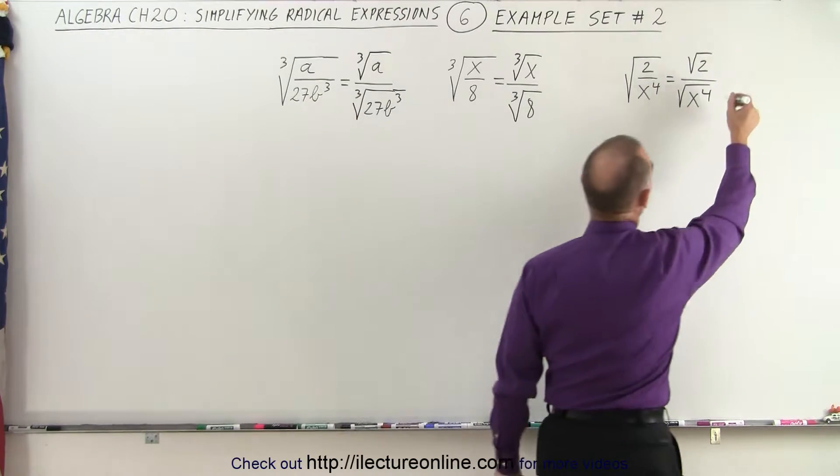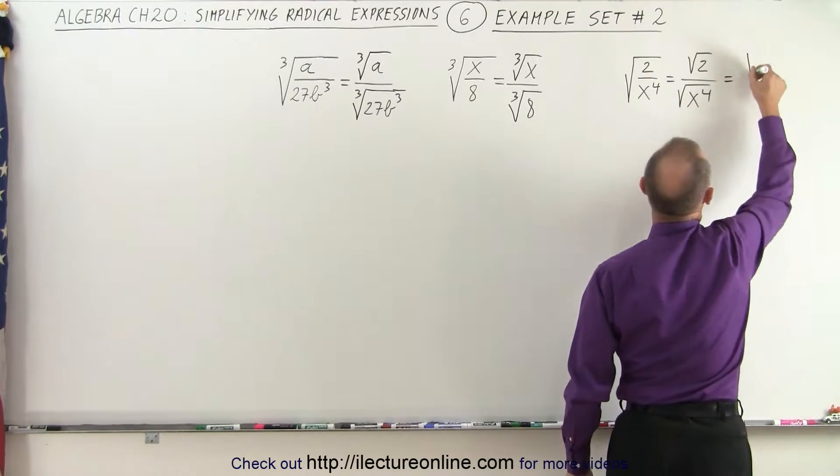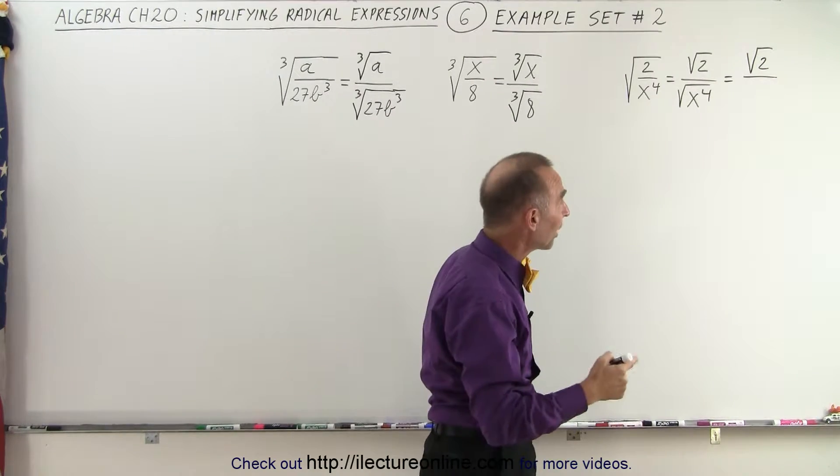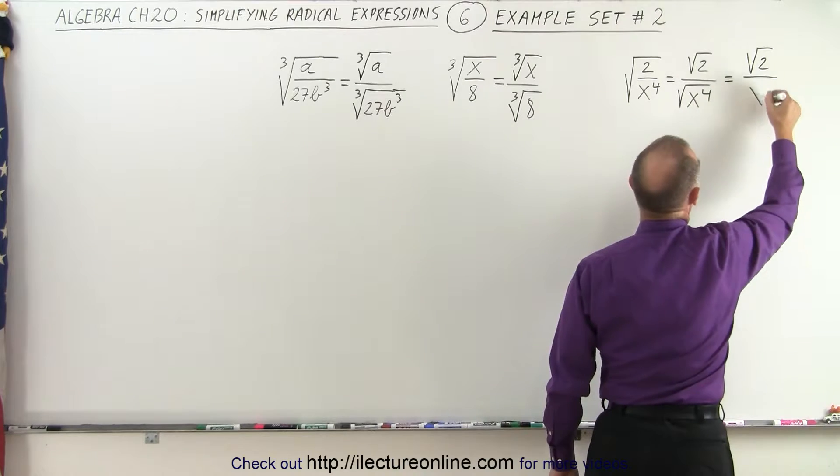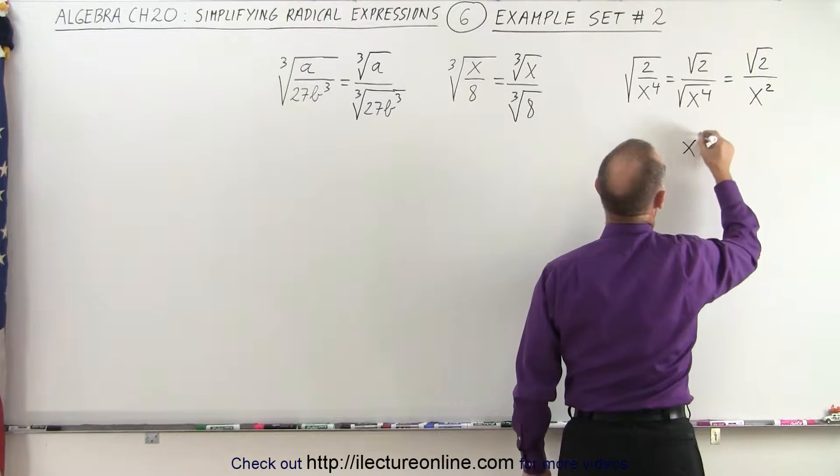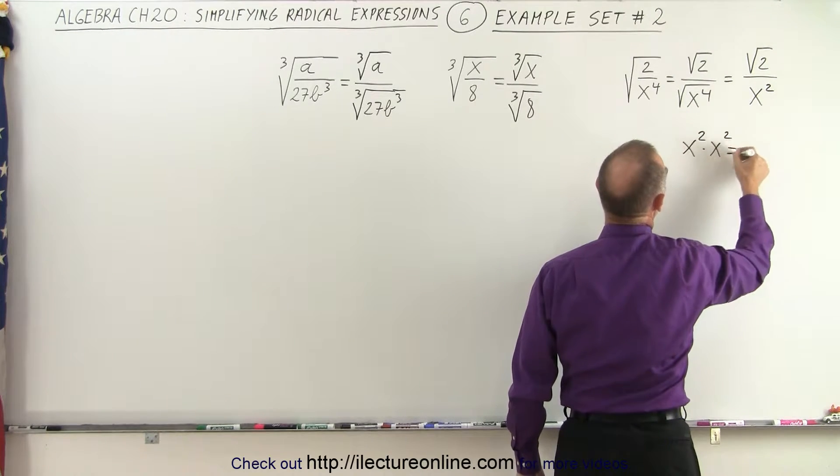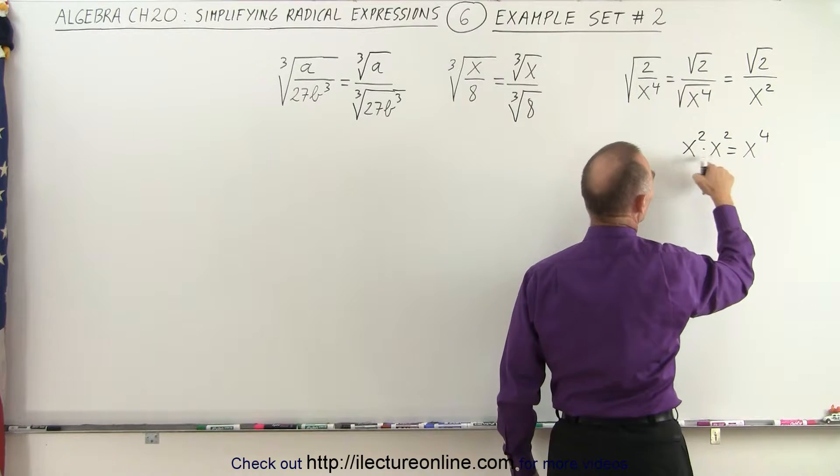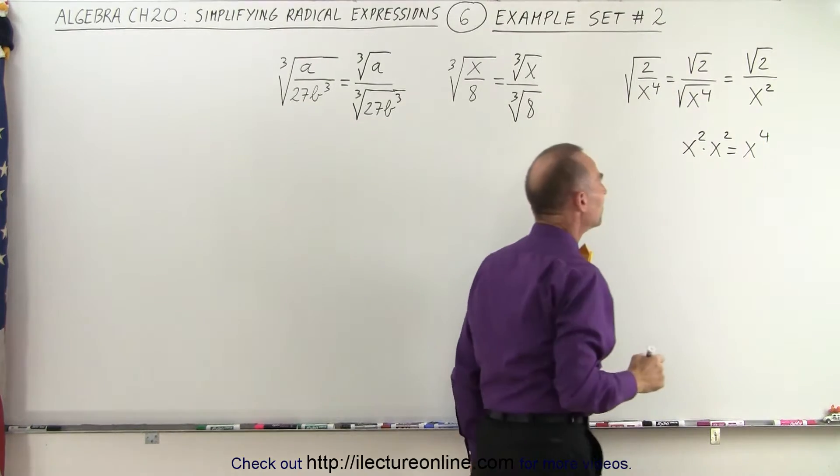Here you can see that the numerator cannot be simplified, so we leave it as the square root of 2, but the denominator, the square root of x to the 4th, is actually x squared, because x squared times x squared equals x to the 4th.